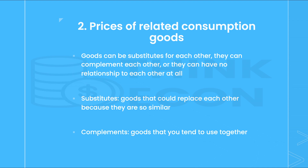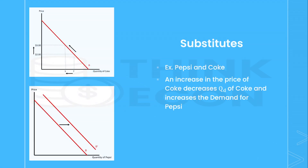The second shift factor is prices of related consumption goods. Goods can be substitutes for each other, they can complement one another, or they can have no relationship to each other at all. Substitutes are goods that can replace one another because they are so similar, while complements are goods that tend to be used together. A great example of substitutes is Coca-Cola and Pepsi — you will consume one or the other and, assuming no taste preference, you will typically buy the cheaper option. In the top graph, the price of Coke has risen from $2 to $3, so there is a decrease in quantity demanded. But notice on the bottom graph for Pepsi, there is an increase in demand — the entire demand curve shifts to the right — because people substitute away from Coke toward the relatively cheaper option, in this case Pepsi.